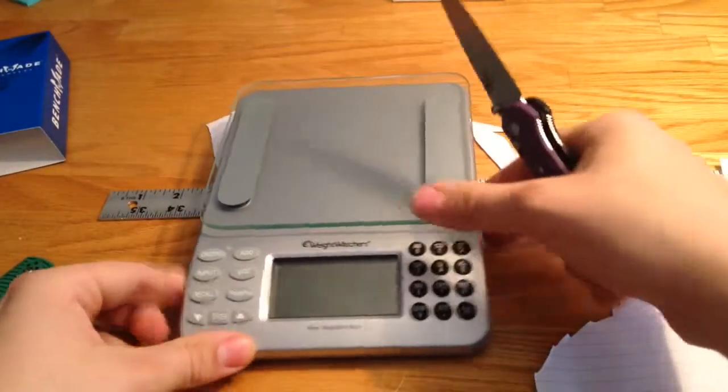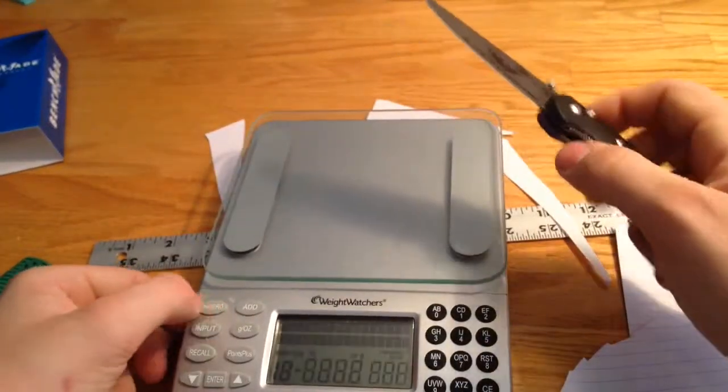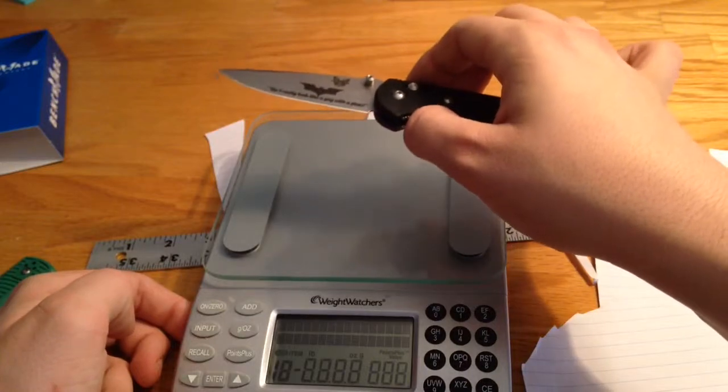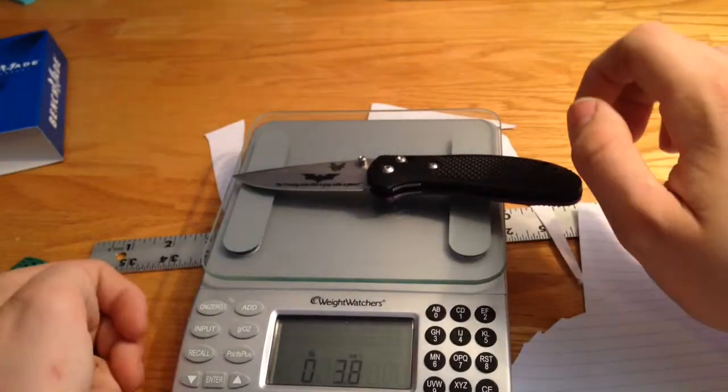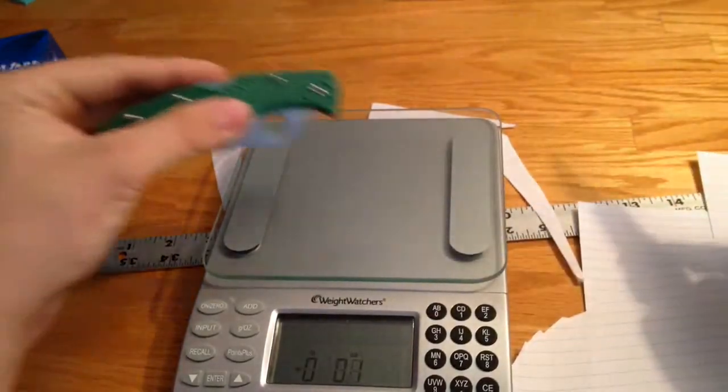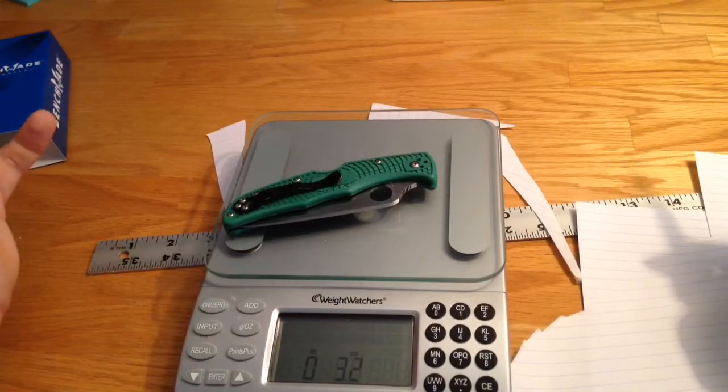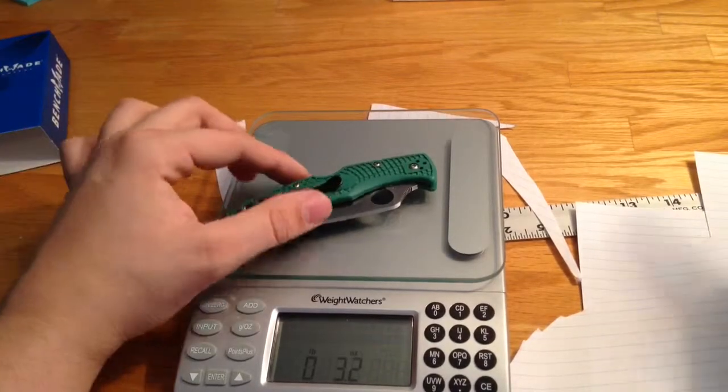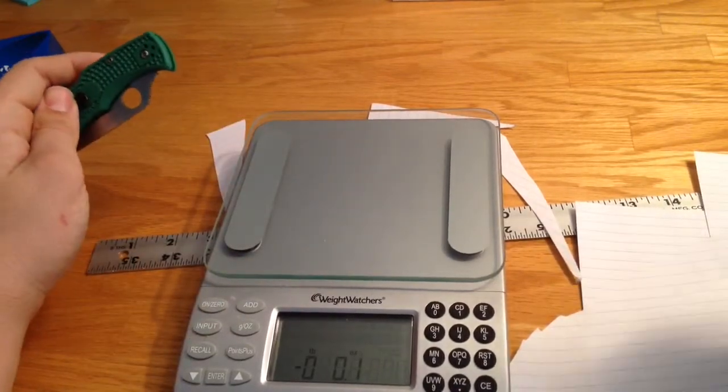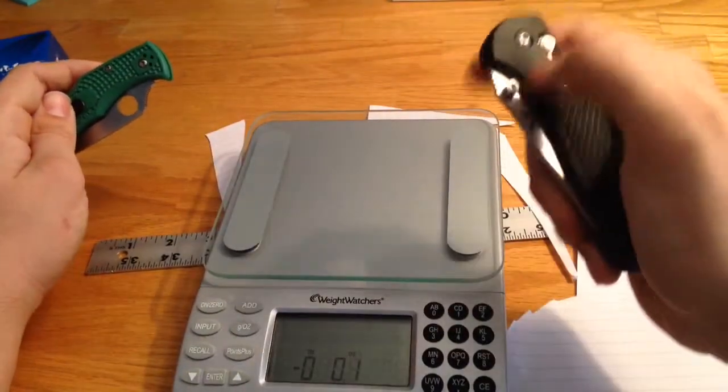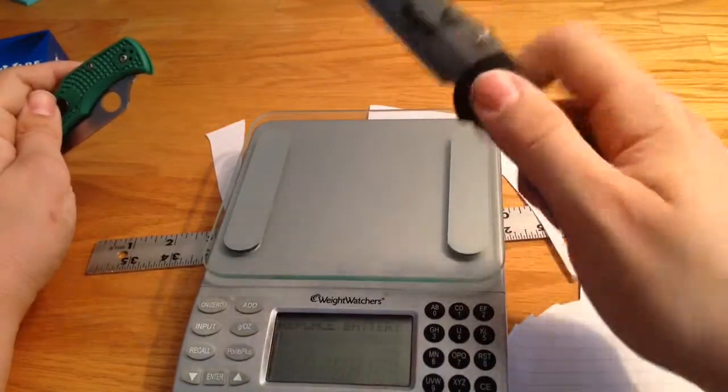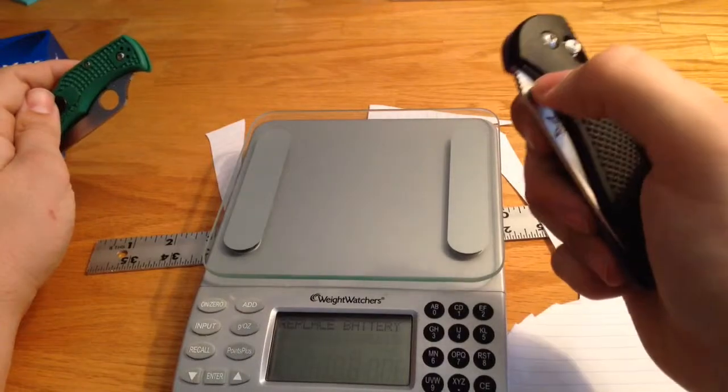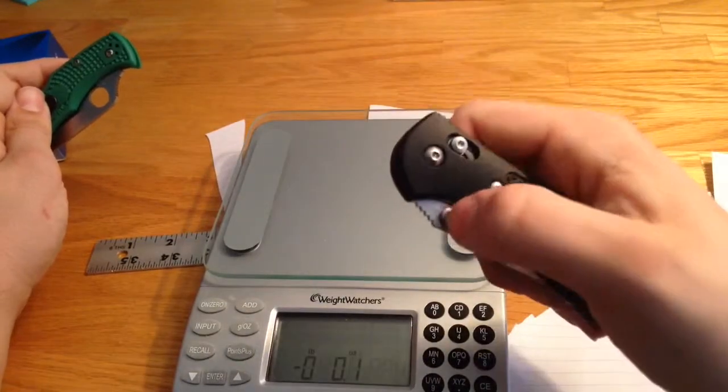And it only comes in at about, let's get the Weight Watcher scale, 3.8 ounces. That's fantastic compared to 3.2 ounces. It's a little heavier actually, but really you don't feel it. It carries so well in the pocket, that split arrow clip that I got added on there. Normal ones come with just a flat plane clip, but I was going extra on this.